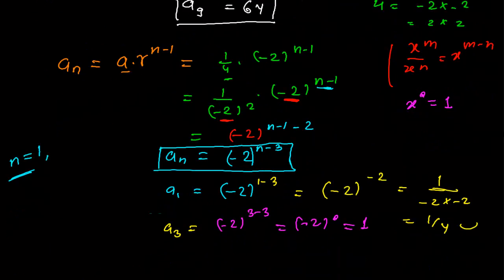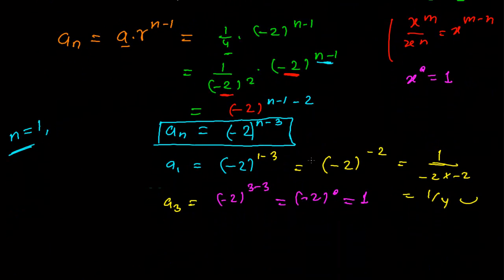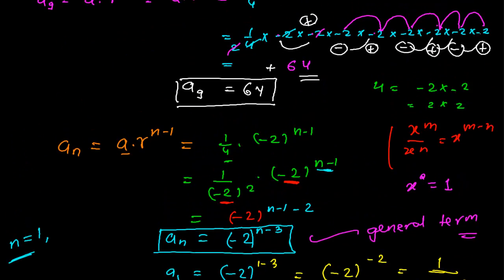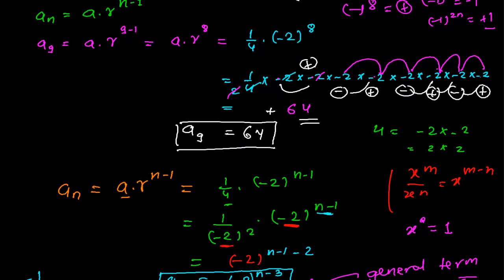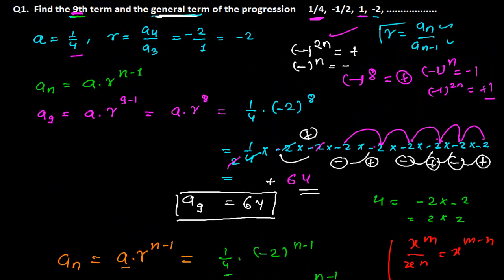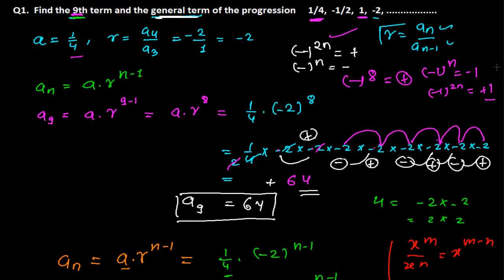So our general term is (-2)^(n-3). Like this you can easily find any term or the general term. We'll be doing more problems of the geometric sequence. I hope you understood this question — keep watching, we'll be solving a lot more problems to build your concept in geometric sequences.